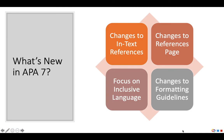APA 7 has made several key changes, including one major change to in-text references, several important changes to the references page, a focus on inclusive language, and changes to formatting — especially for student papers not being submitted for publication. In this video, I'll focus on the changes to in-text references and the references page. For information on key changes to language and formatting, see the Academic Skills video, Say Hello to APA 7 Part 2: Key Changes to Language and Formatting.